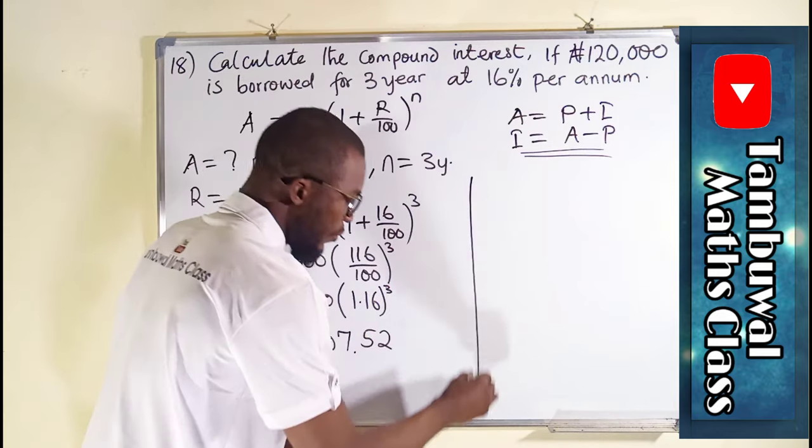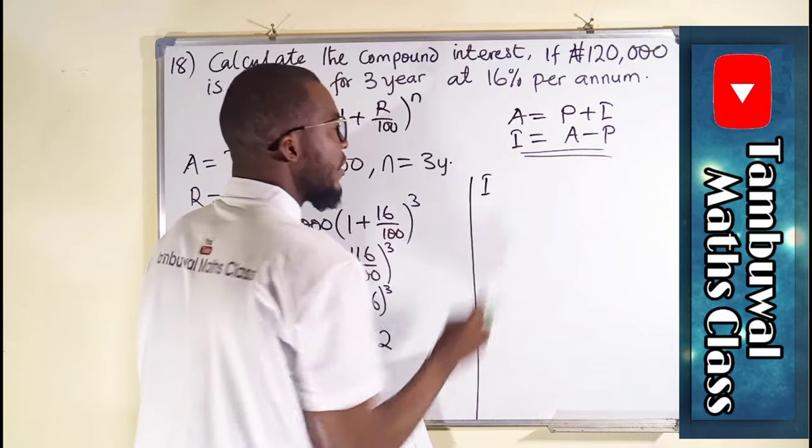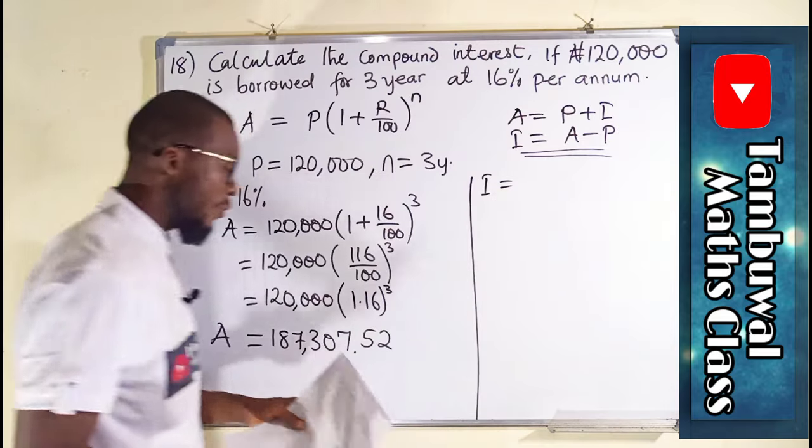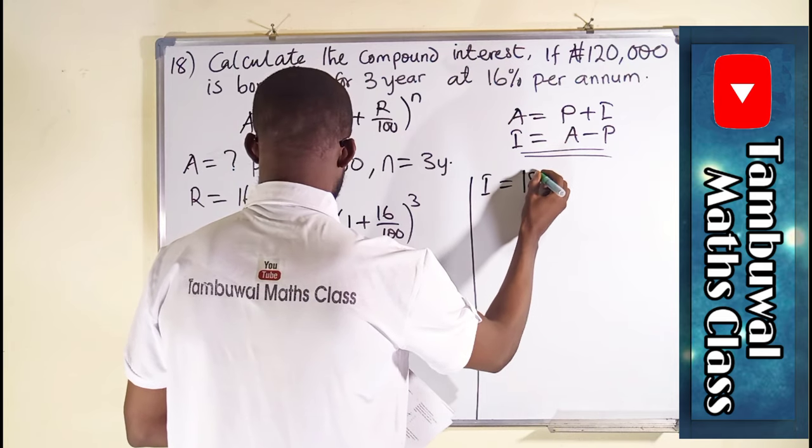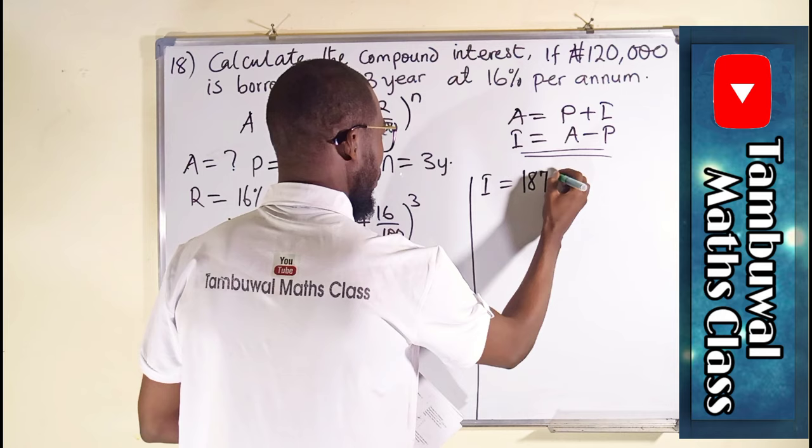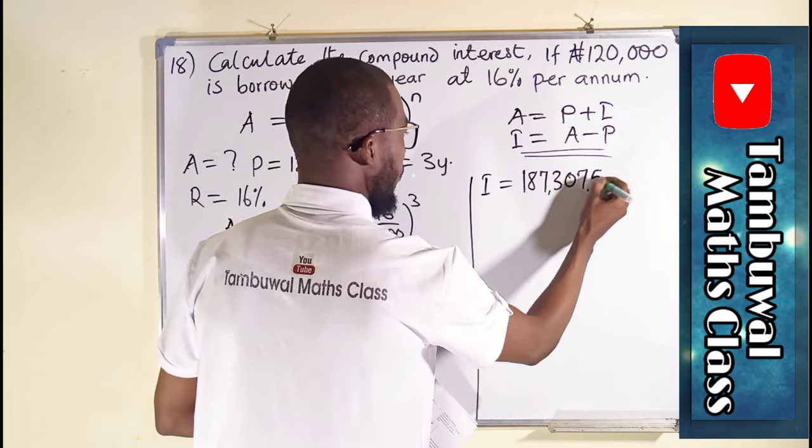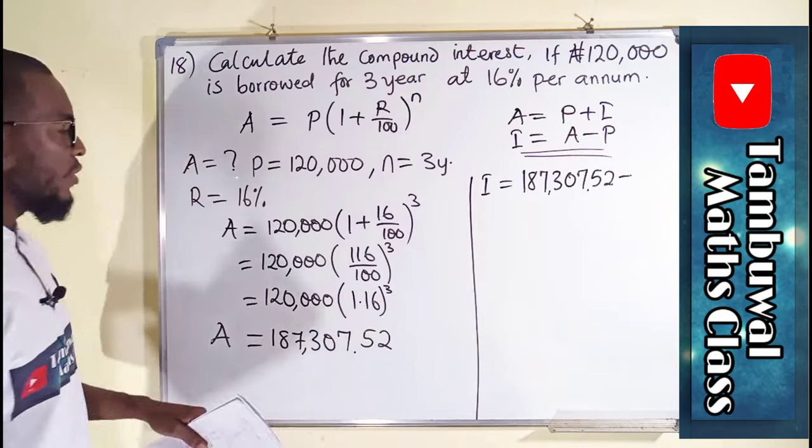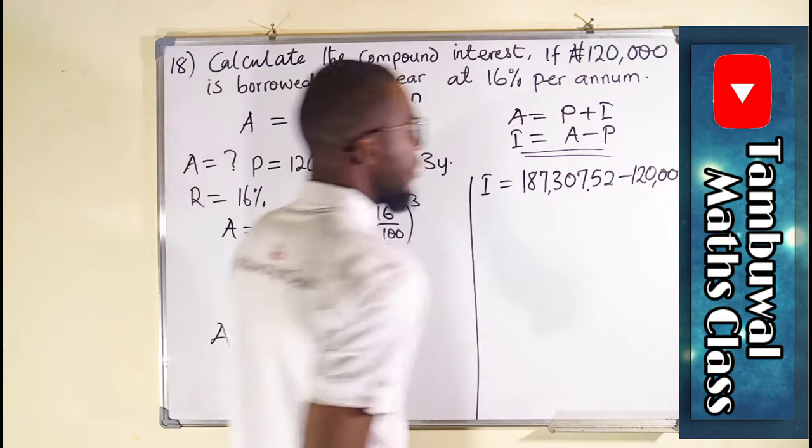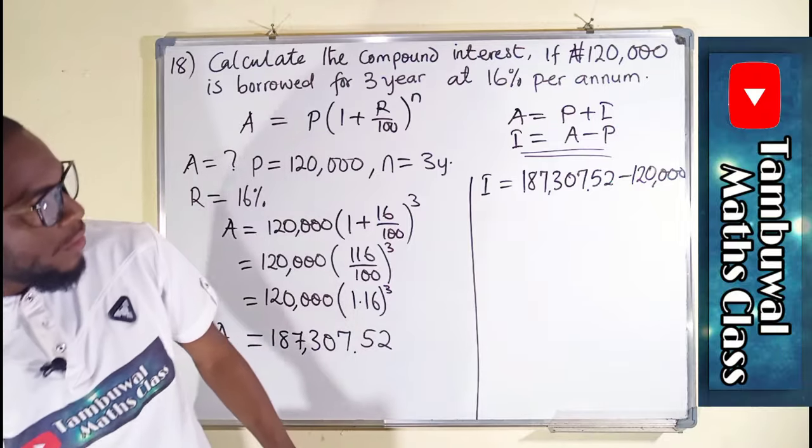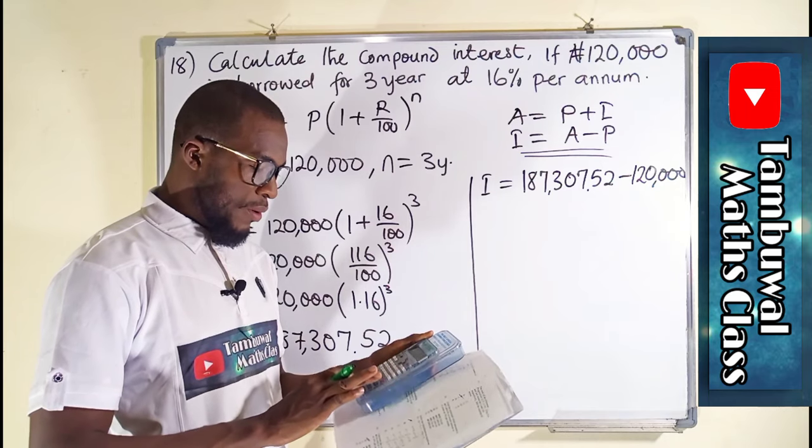To find that, we have to substitute into this. The interest, which is I, is equal to the amount which we have gotten. So this is equal to 187,307.52 minus, let me see if I have space here, 120,000. So let us subtract. I already have the value here, so minus 120,000.